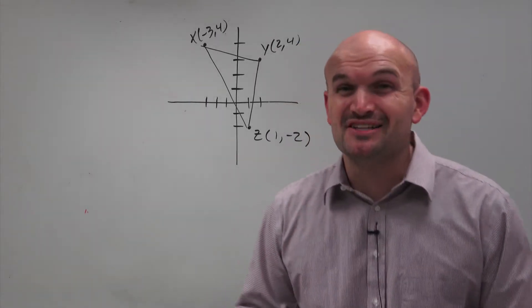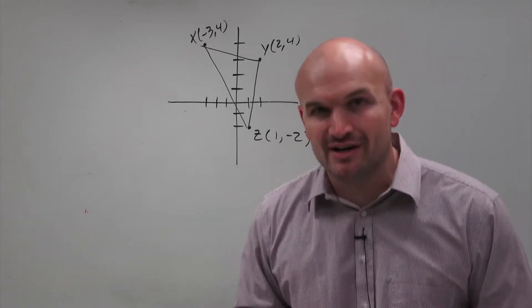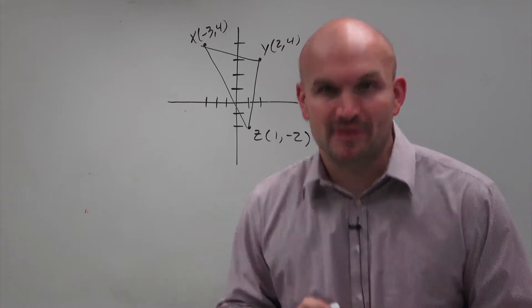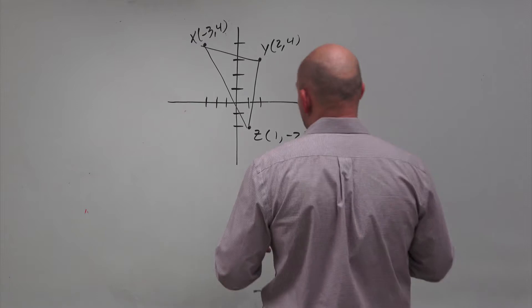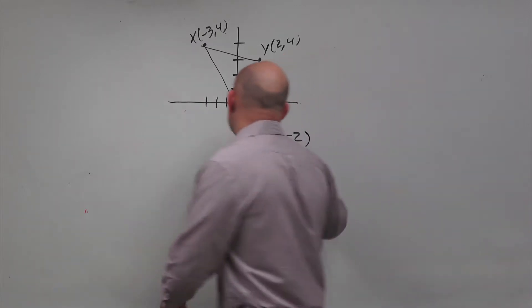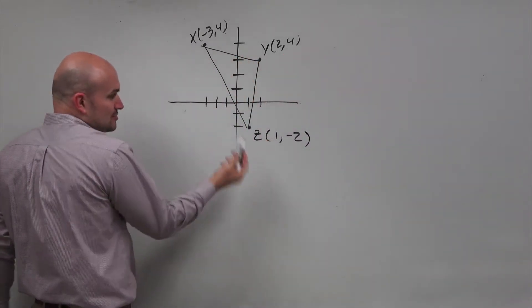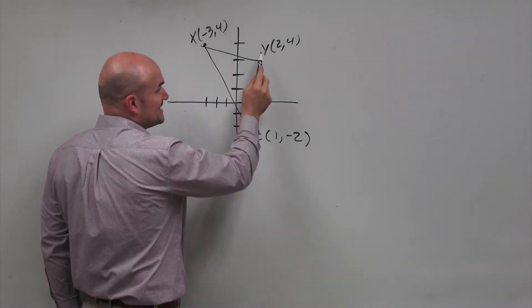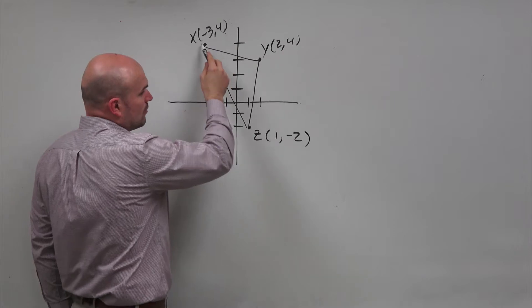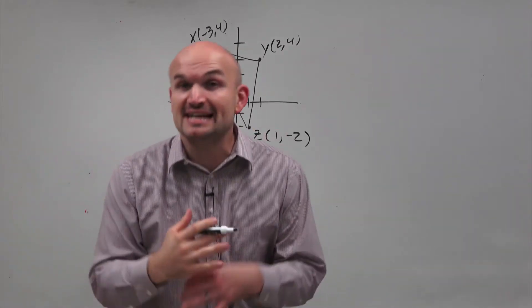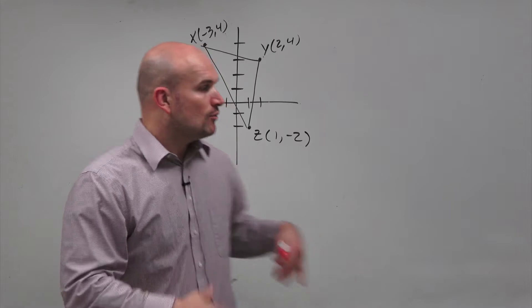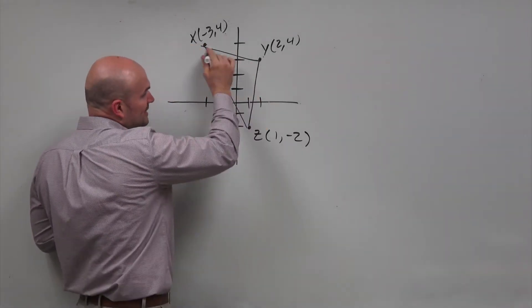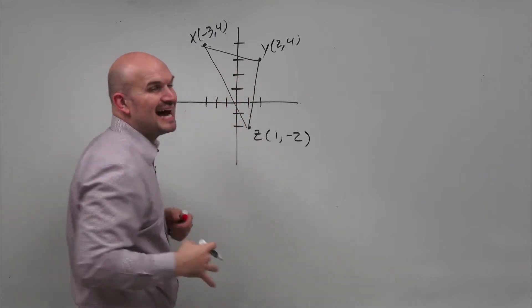In this video, I want to show you how to find the perimeter as well as the area when given three coordinate points that make up a triangle on the coordinate plane. If we're going to find the perimeter, we're going to find the length around this triangle — the distance between each of these points from Z to Y, from Y to X, and X to Z, and then add them all up. The area is the space inside all of these vertices.